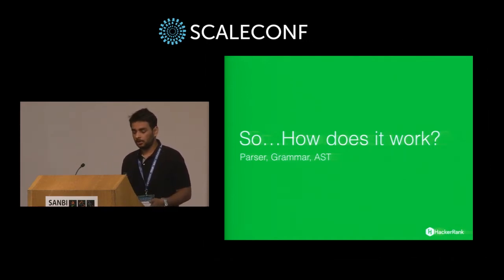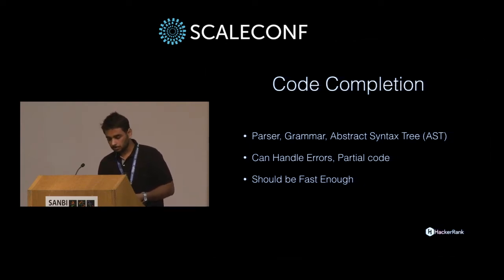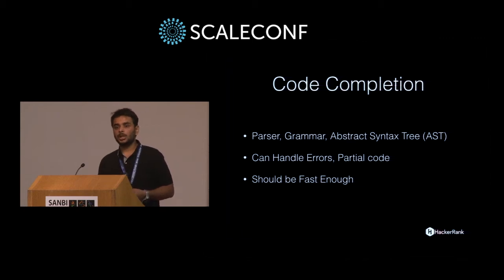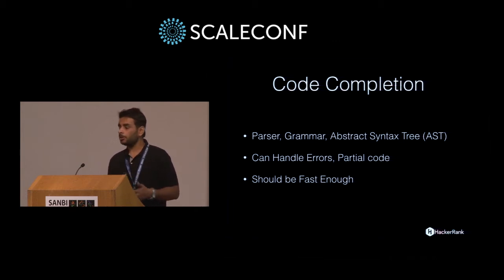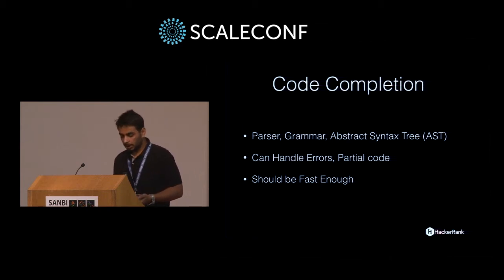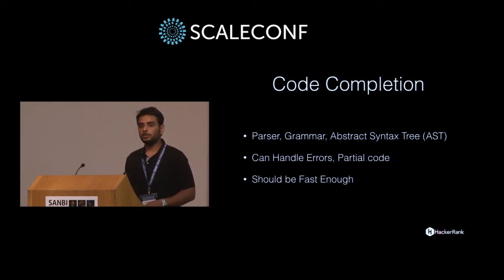In this section I'll tell you how code completion actually works. The main things are parser, grammar, and ASTs. A parser is software that converts your code into tokens, and you can then get ASTs from that. For the parser to work, you need a grammar file for the language. Grammar files are available online for all languages, but if you need to provide completion for a language you created, you need your own grammar file.